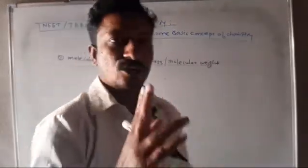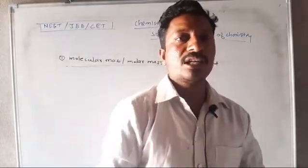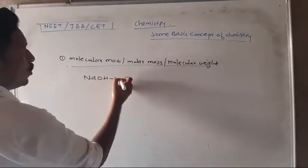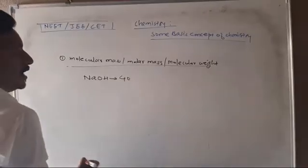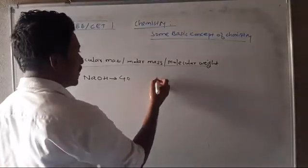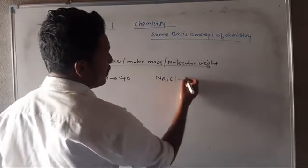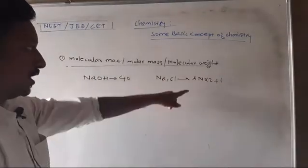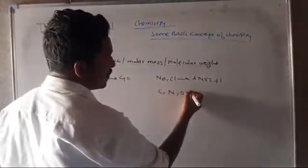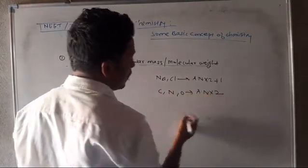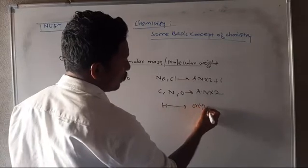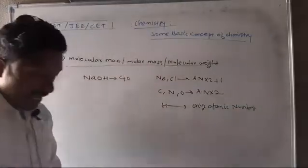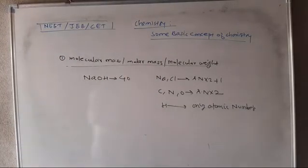I will give you two concepts and two examples to make things clear. For molecular weight, we look at atomic numbers. For example: sodium and chlorine — atomic number into two plus one, atomic number into two plus one. Carbon, nitrogen, oxygen — atomic number into two.